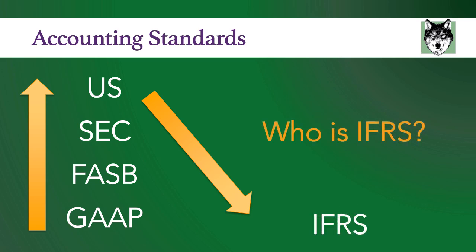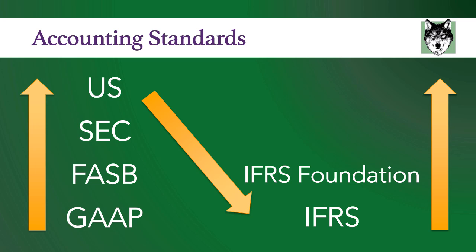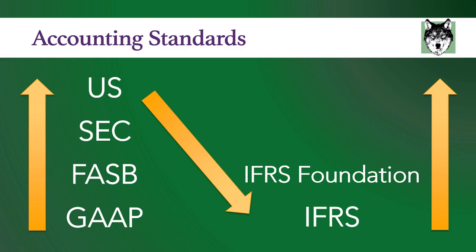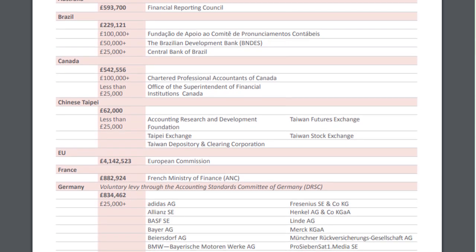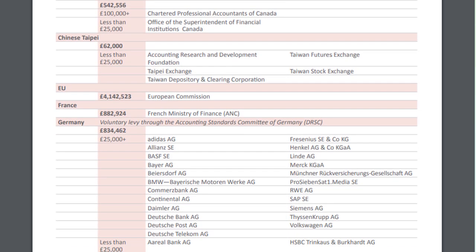So who is this international organization? IFRS is run by an entity called the IFRS Foundation. The IFRS Foundation is a non-profit organization that was founded in Delaware in the United States. The IFRS Foundation is funded by donations, and they get a lot of their donations from U.S. companies. You can download the annual report from the IFRS Foundation website.